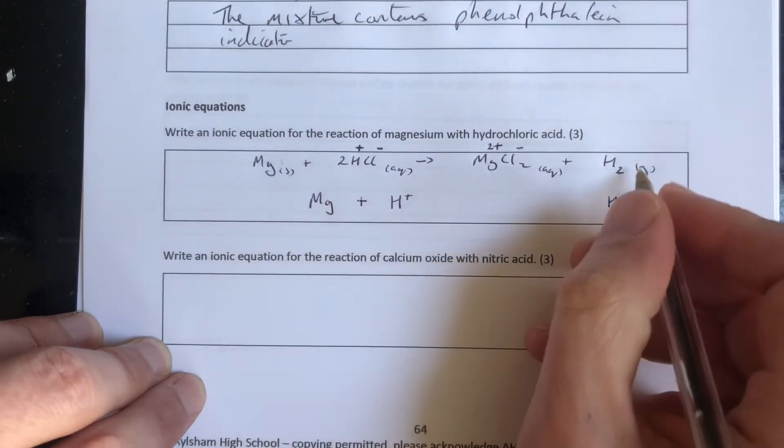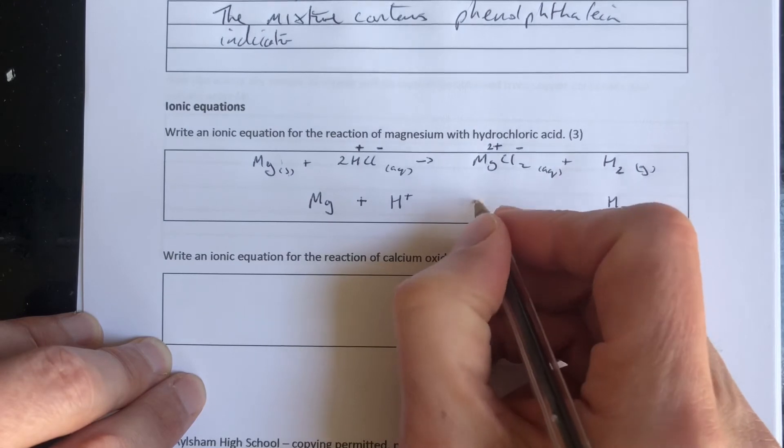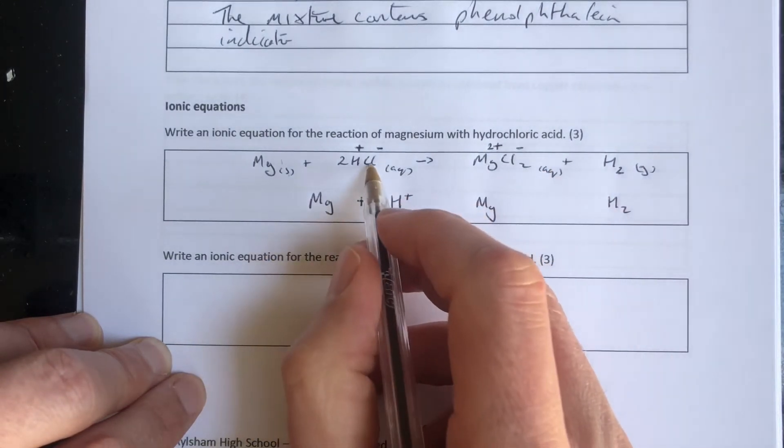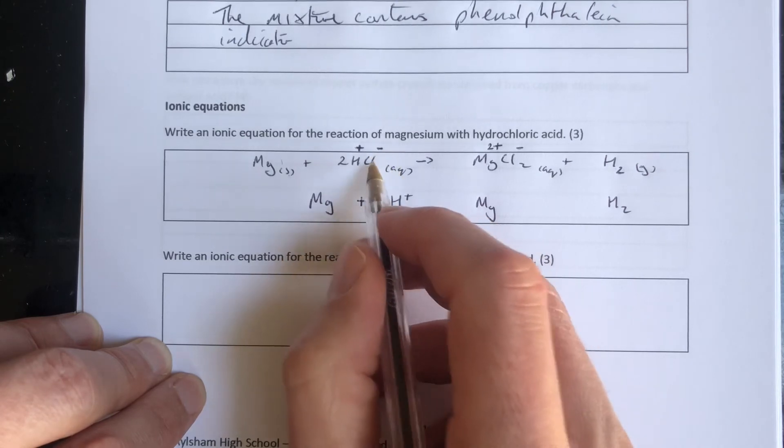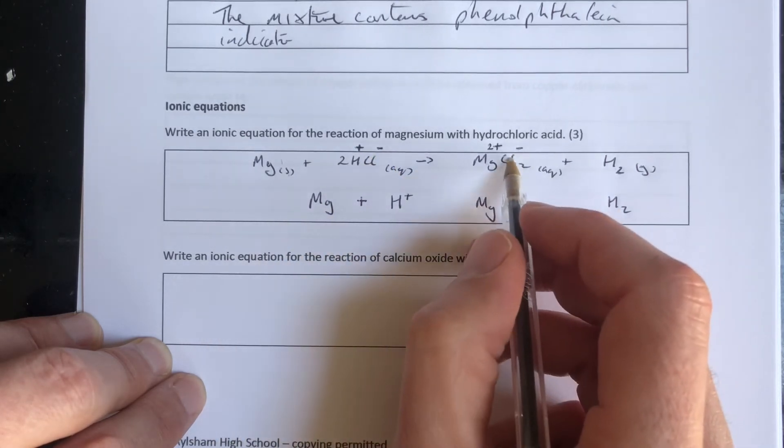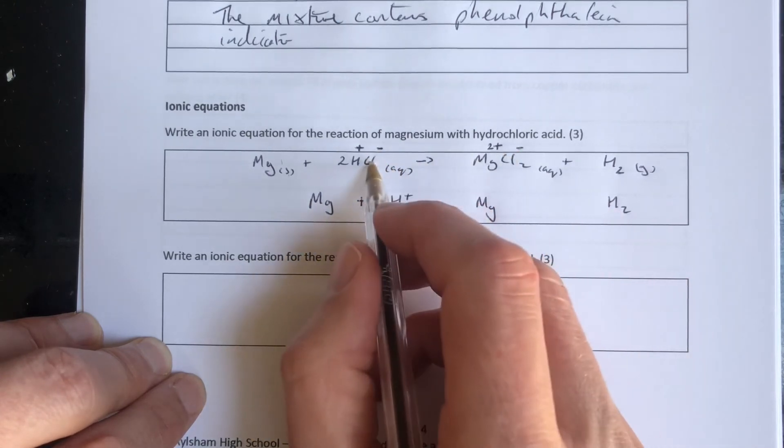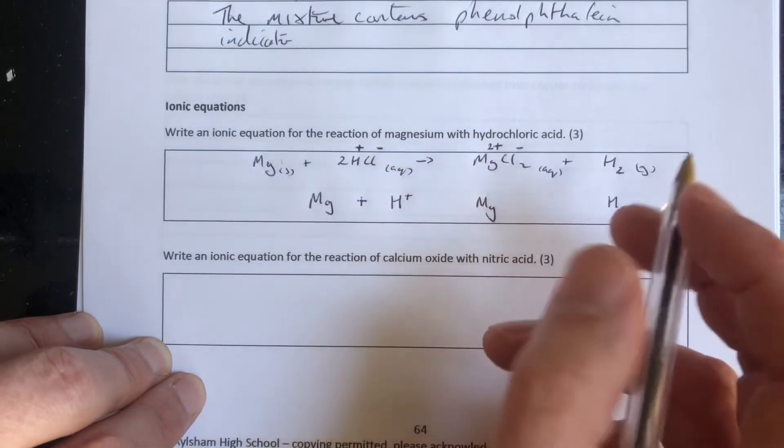H plus. And we can put the hydrogen there straight away as well. We put the Mg in, didn't we, here. Chloride ions, Cl minus aqueous. Cl minus aqueous. Well they're not changing their charge. Cl minus, Cl minus, or their state. Aqueous, aqueous. So we're going to ignore those.